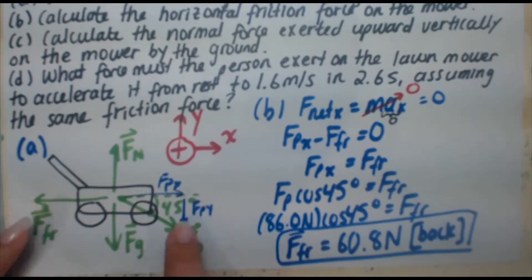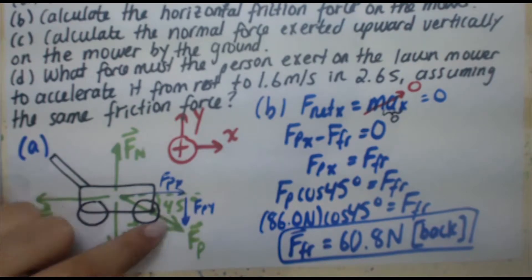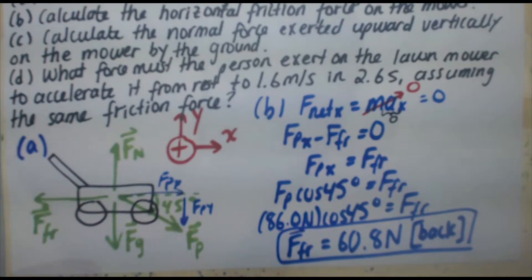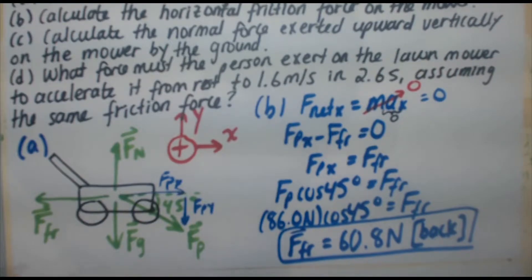So whereas in the x direction, we only have two forces, in the y direction, we've got three, fpy, fg, fn, where fn is in the positive direction, and fg and fpy are in the negative y direction. Okay, so I'm going to go ahead and set up my Newton's second law expression for that now.